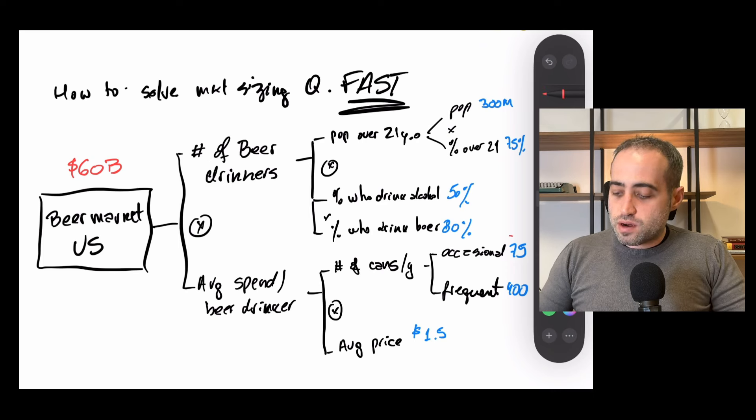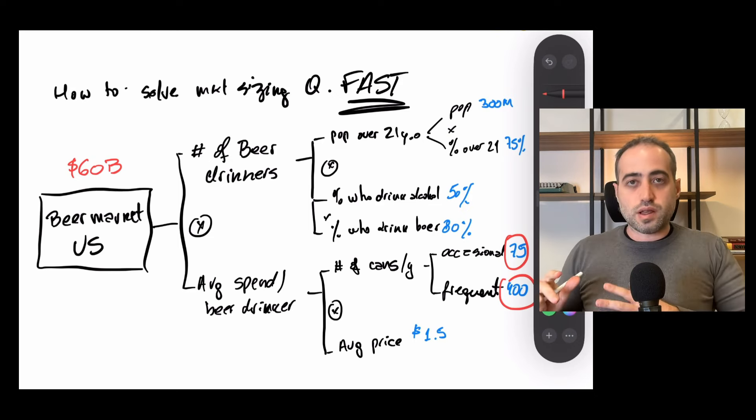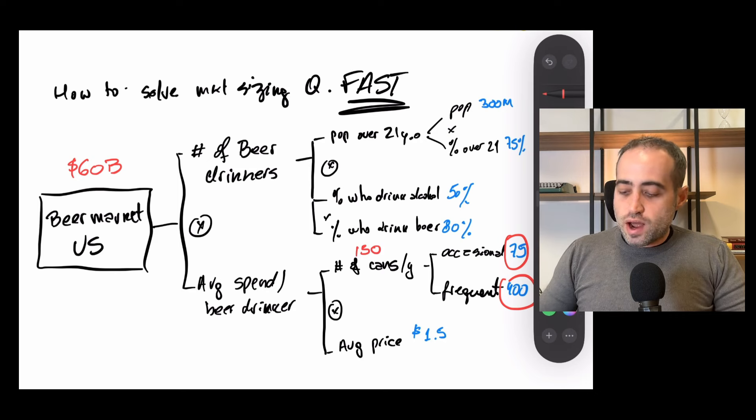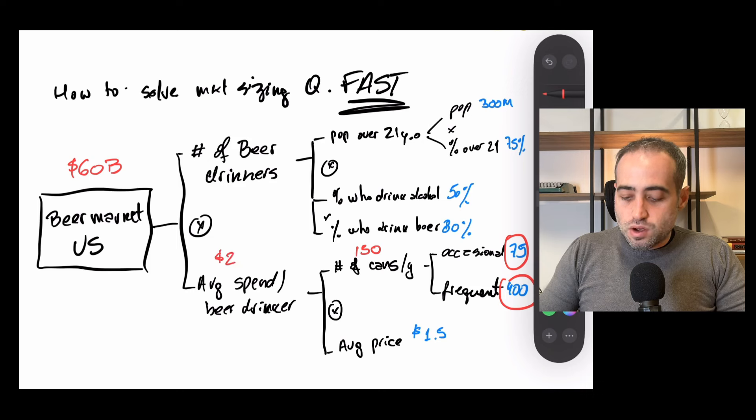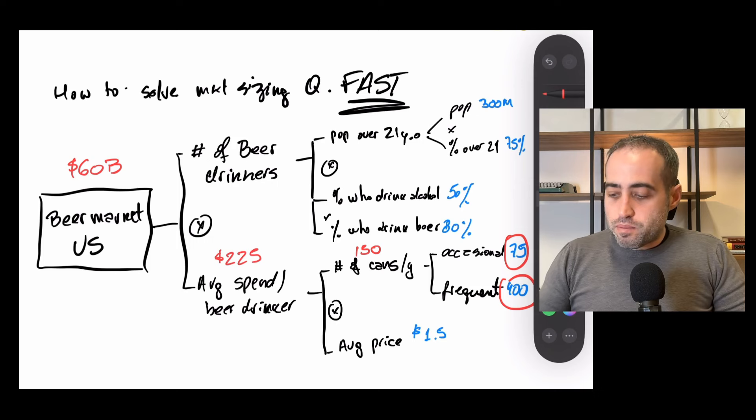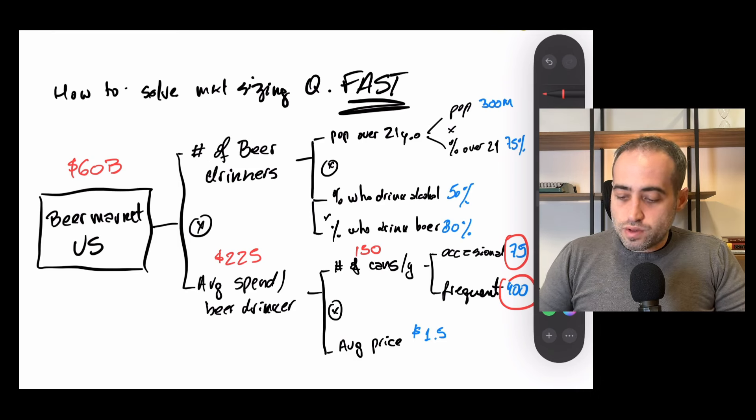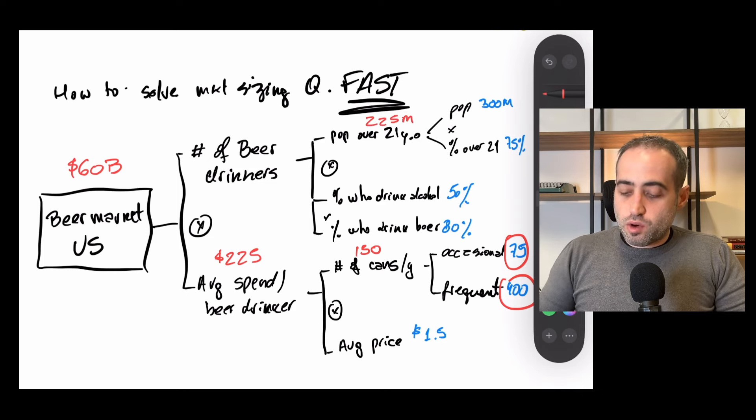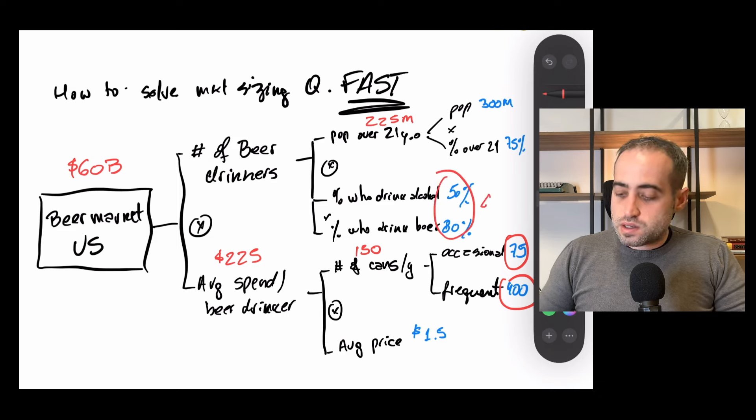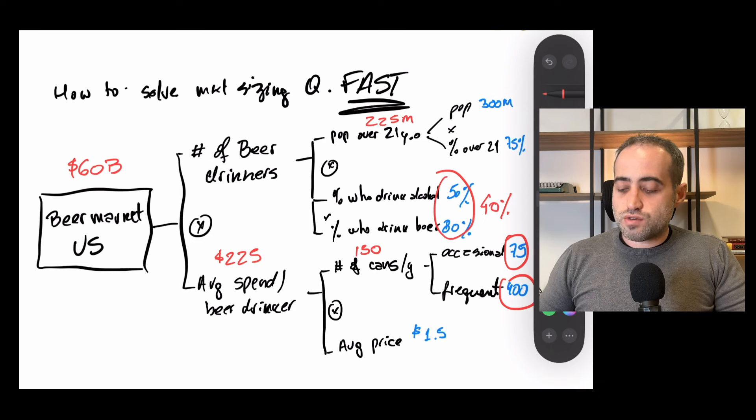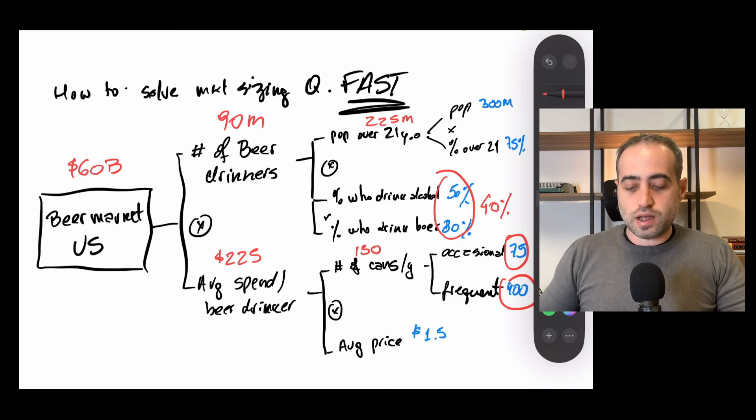Obviously to do this math here, I need to know what percentage of people are frequent and occasional. I'm just gonna say it's 150, just to show you how this works. Then average price is $1.5. So we have an average spend of $225. Population over 21 is 300, it's 225 as well, 225 million people. And then I multiply that by 40% because this is 40% combined. So 40% of 225, it's going to be 22.5 times four. So about 90 million beer drinkers. So we have 90 million beer drinkers at $225. So this gives us about $20 billion.